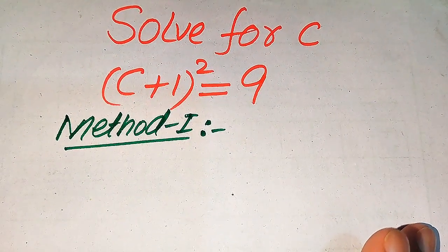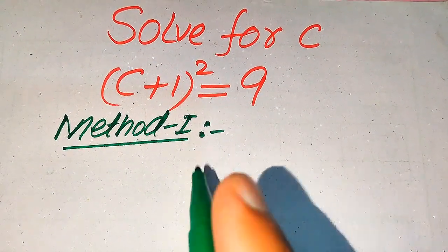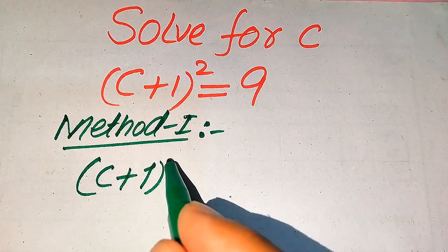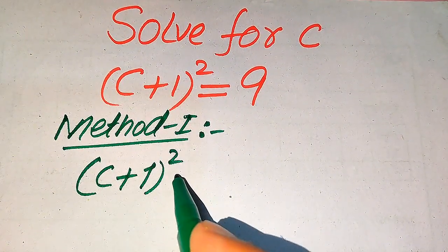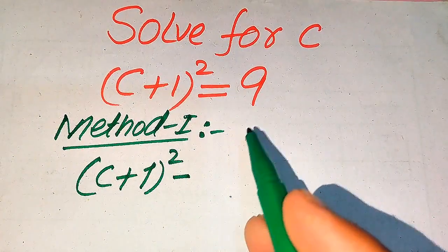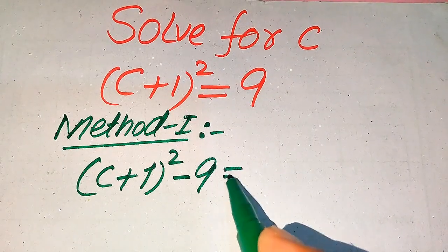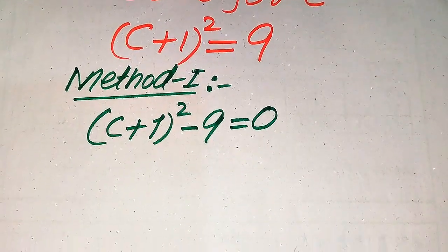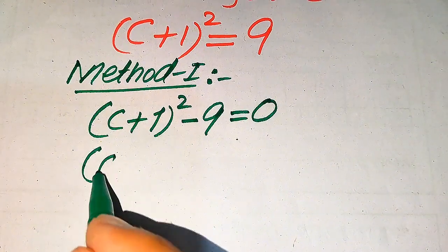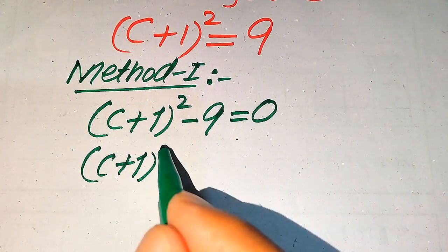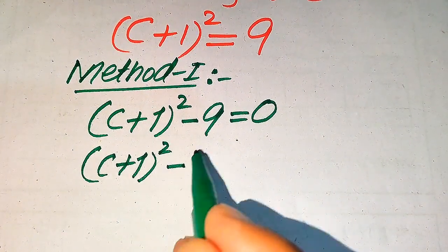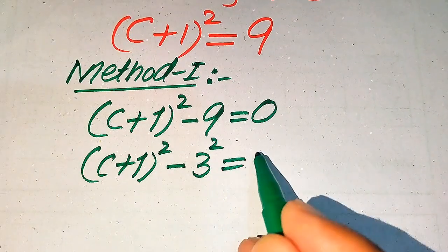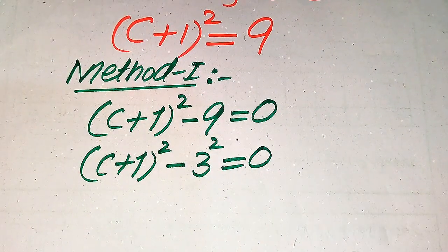In the first method, we need to move this 9 to the left hand side. It will be written as (c + 1)² — this is positive 9, when we move it to the left hand side it will become minus 9. We rewrite this equation as (c + 1)² minus 9, and we write 9 as 3² equals 0.